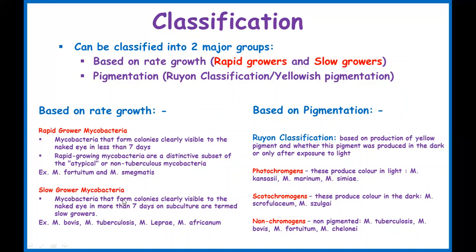Slow growers are Mycobacterium that take more than seven days to form observable colonies. This is the group that contains most of the Mycobacterium species detrimental to human beings. Examples include Mycobacterium bovis, Mycobacterium tuberculosis, Mycobacterium leprae, and Mycobacterium africanum — all regarded as slow-growing Mycobacterium.